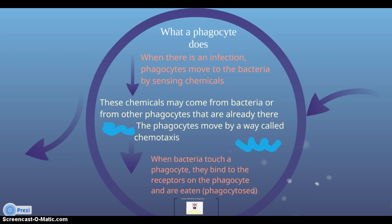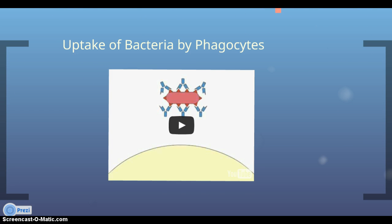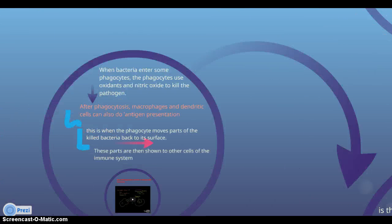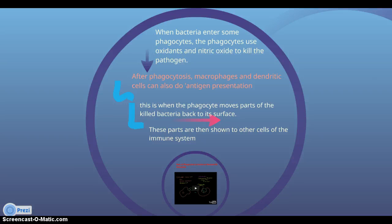When bacteria touch a phagocyte, they bind to the receptors on the phagocyte and are eaten through phagocytosis. When bacteria enter some phagocytes, the phagocytes use oxidants and nitric oxide to kill the pathogen. After phagocytosis, macrophages and dendritic cells also perform antigen presentation — the phagocytes move parts of the killed bacteria back to their surface, which are then shown to other cells of the immune system.